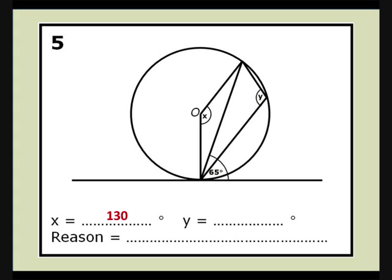As for the previous question, we have an obtuse angle at the circumference, which is half the reflex angle at the centre. 360 take 130 is 230, so y is half of 230.